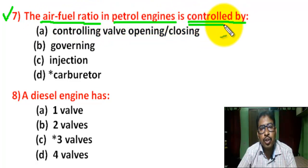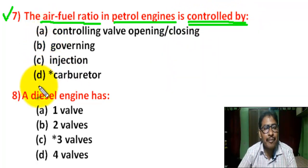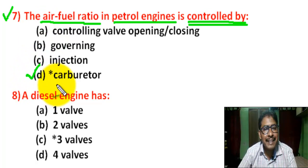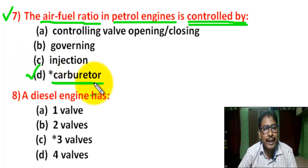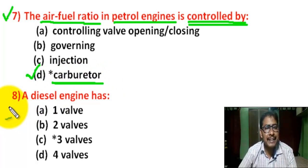Correct answer is D — carburetor. The air-fuel ratio in a petrol engine is controlled by the carburetor.